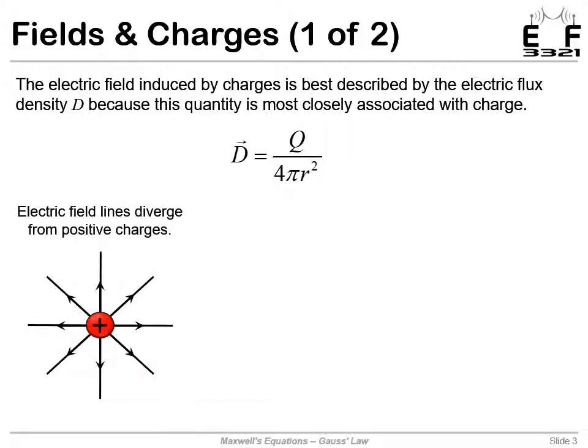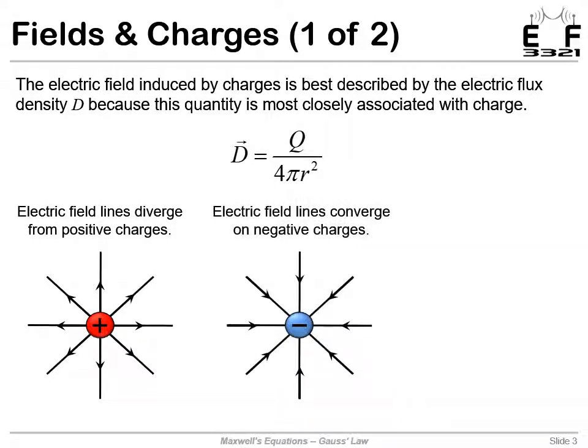What we'll see is that if we have a positive charge, the electric field lines emerge from that charge. They point outward. Sometimes that positive charge is called a source of the electric flux. If we have a negative charge, we have the same picture, but the direction of those field lines are now inward toward the negative charge. Sometimes that negative charge is called a sink of the electric flux.